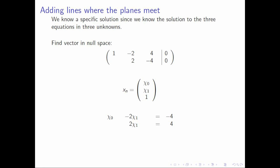If you plug this in, you get these two equations and two unknowns. And you can then solve for chi 0 and chi 1. And you get this vector.